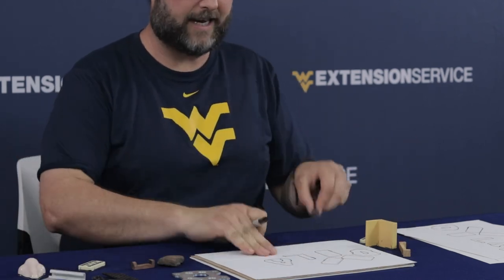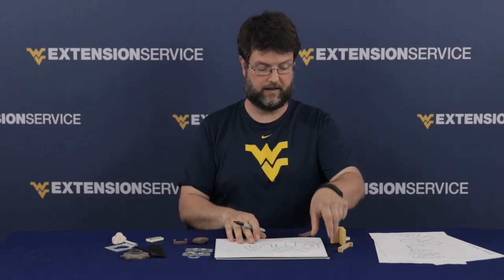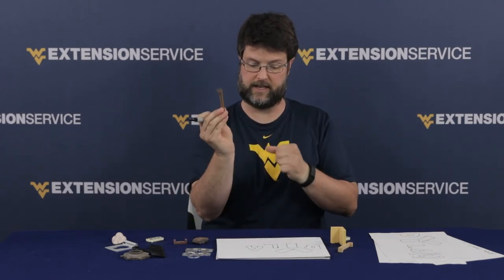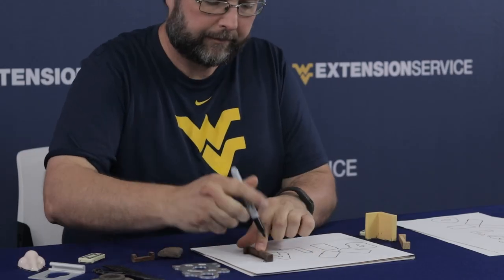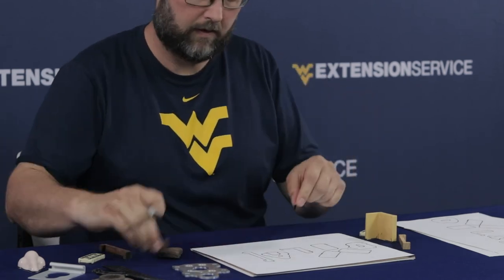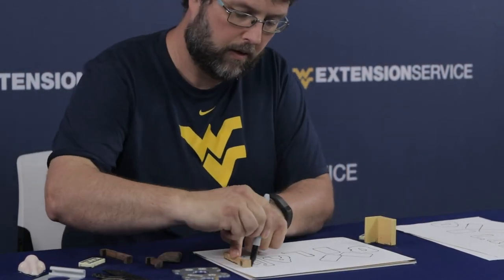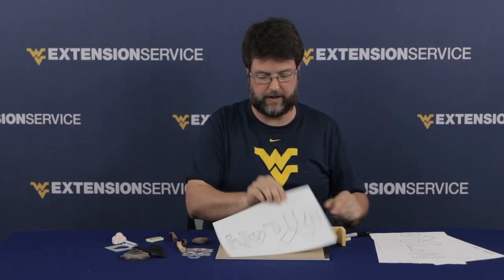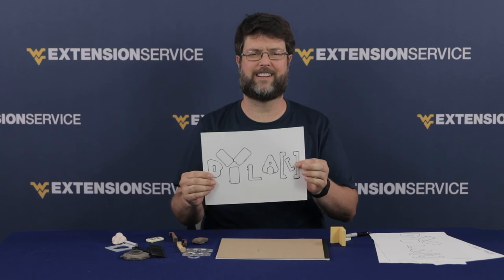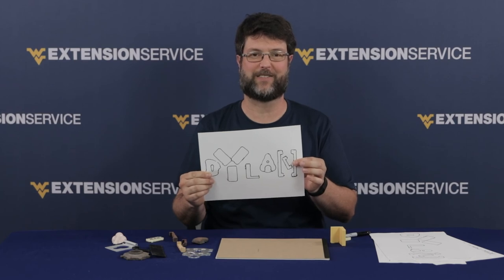D, Y, L, A — and then for making the N I'm going to use some of these little wooden blocks. Okay, all done: D, Y, L, A, N. I hope you enjoy this and I can't wait to see you spell your name with found object typography. Thank you!